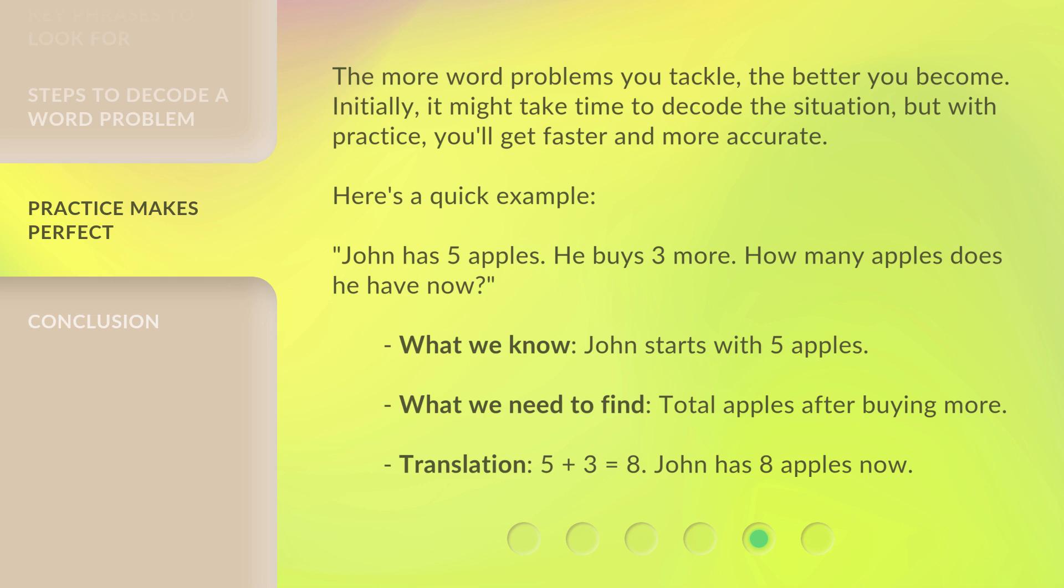Here's a quick example: John has 5 apples. He buys 3 more. How many apples does he have now? What we know: John starts with 5 apples. What we need to find: Total apples after buying more. Translation: 5 + 3 = 8. John has 8 apples now.